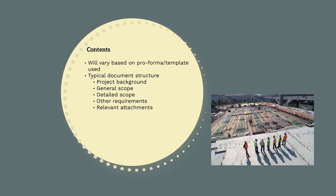The typical contents include: the project background; a general, high-level outline of the subcontractor's scope; a detailed scope section listing out each deliverable and what is required; other requirements and expectations around quality, safety, and program — we'll touch on those more later; and a list of relevant attachments such as design drawings, specifications, project management plans, and so on.